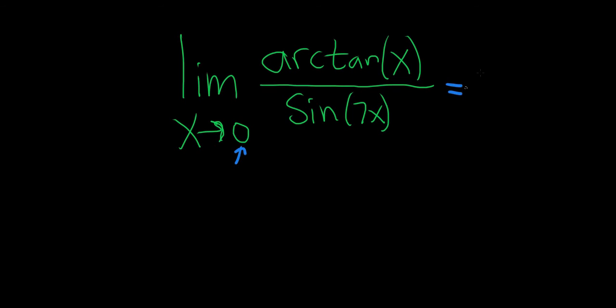So if we do that, we get the arctangent of zero over the sine of seven times zero, so just the sine of zero. That'll give us zero over zero, which is indeterminate. So this is called an indeterminate form.